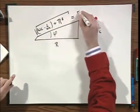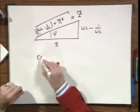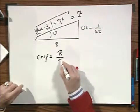But that is exactly Z. And so the cosine of phi equals nothing but R over Z.